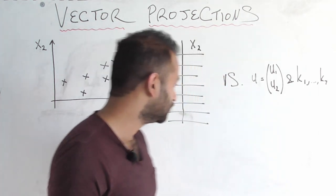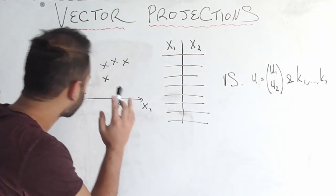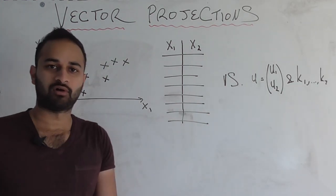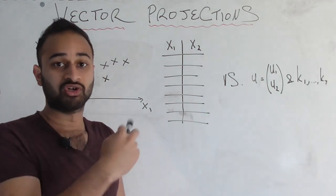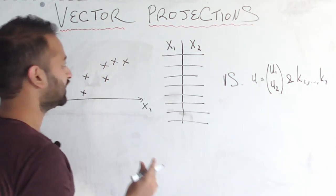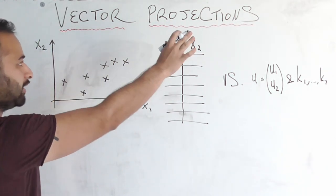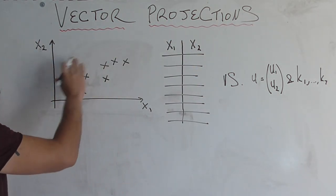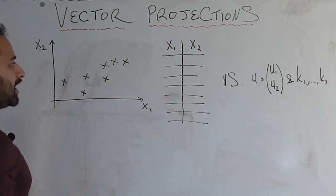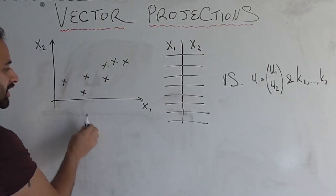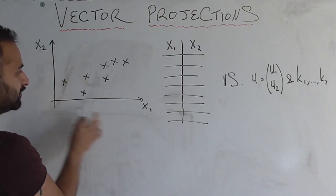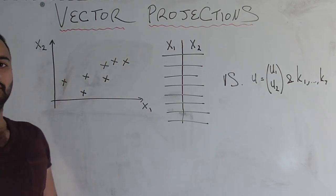Without further ado, let's talk about what it means to take a vector projection — what does it mean for one vector to be projected onto another vector? Notice that we have these seven data points here, all these little x's, and each of them is a collection of an x1 variable and an x2 variable, so they live in the two-dimensional plane.